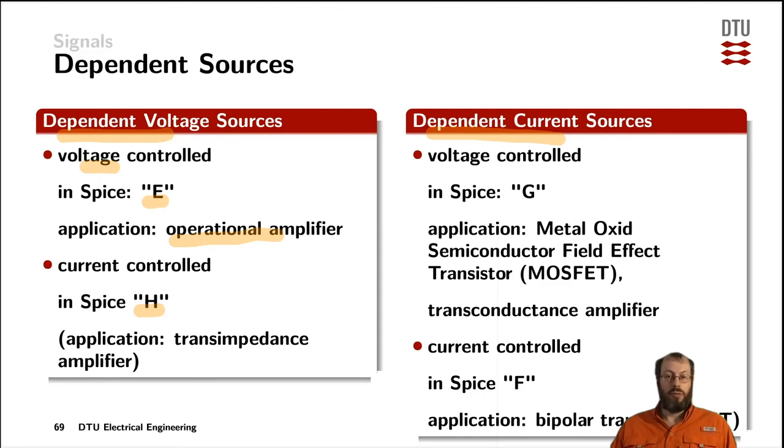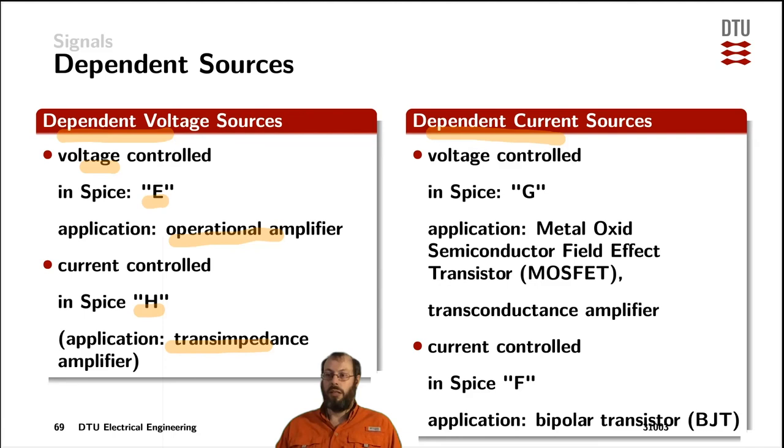The current controlled voltage sources are called trans-impedance amplifiers. And the opposite of that one would be a trans-conductance amplifier.